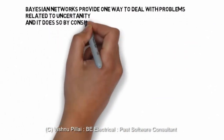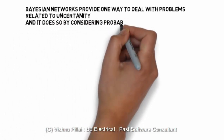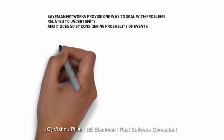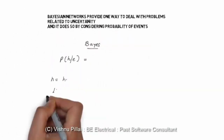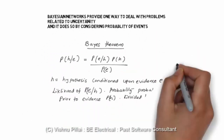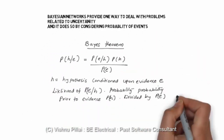When dealing with uncertainty, we need to consider probability when designing a system. One option to use is Bayes' theorem, and there is a Bayes network which we will discuss in the next lecture to understand this problem better.